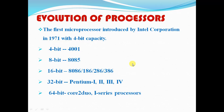The evolution of processors started with Intel Corporation in the 1970s with a 4-bit capacity — the first microprocessor was the 4004. The bit generation refers to how many bits are processed at a time: 4-bit, 8-bit, 16-bit, 32-bit, and 64-bit. Here are example devices from all these different generations.